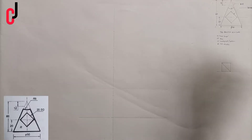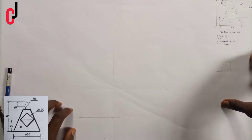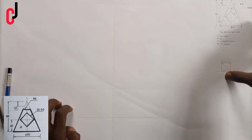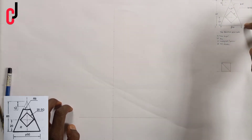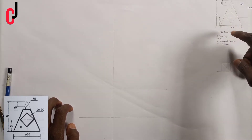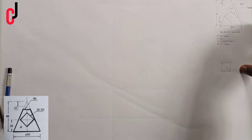Welcome to JC Engineering and Technical Drawing. Today we'll be discussing how to produce the first form of a cone. Here is my question — this is the image, and we shall produce first the true shape, the plan, the development, and then the end elevation.